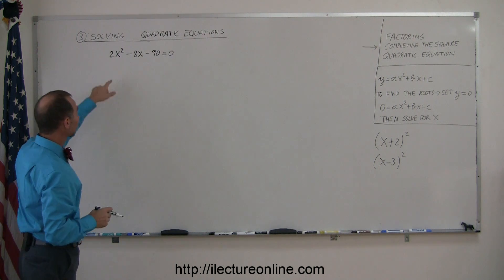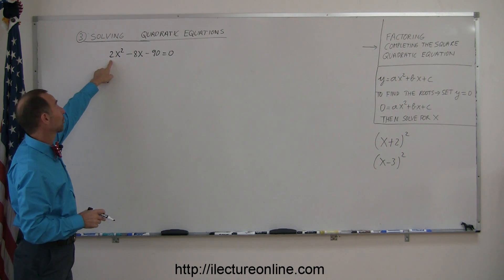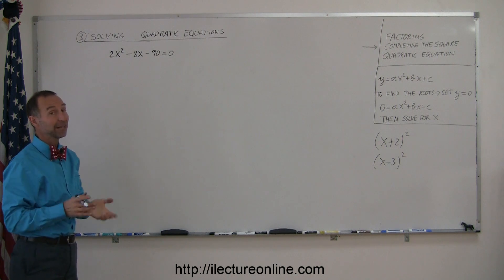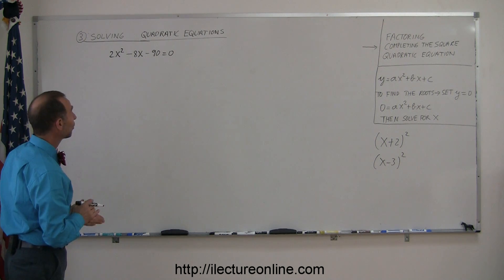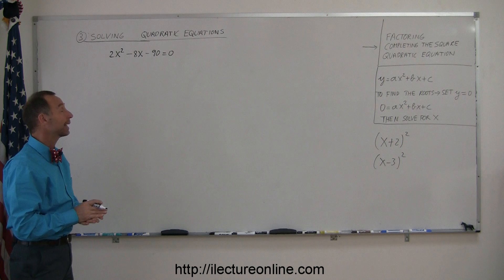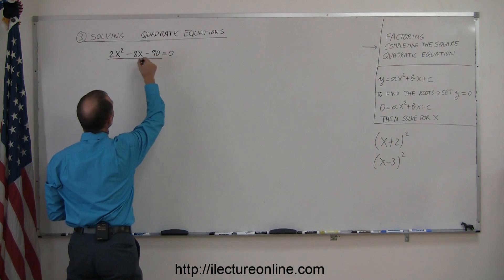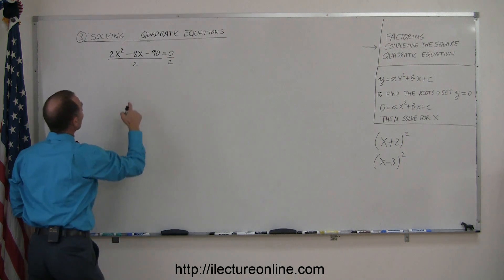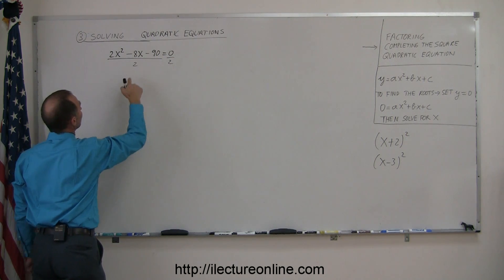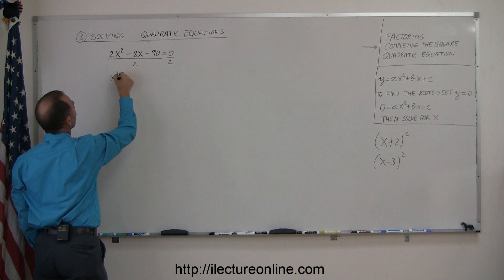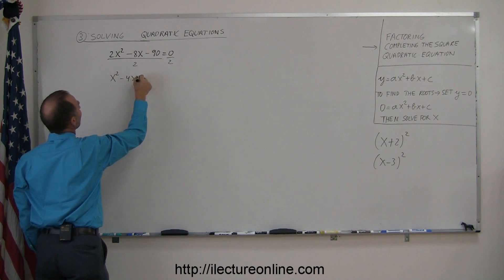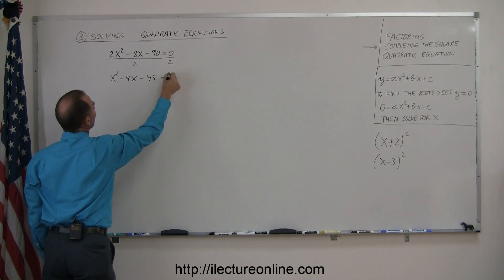The first step is to make sure the coefficient in front of the x squared term equals 1. If it's not, like in this case, divide both sides by that coefficient. We divide both sides by 2, so we get x squared minus 4x minus 45 equals 0.